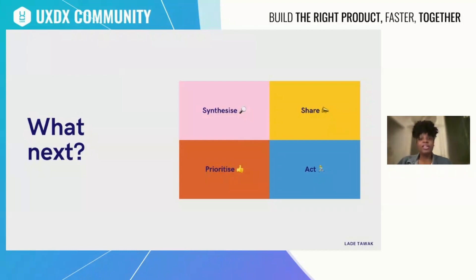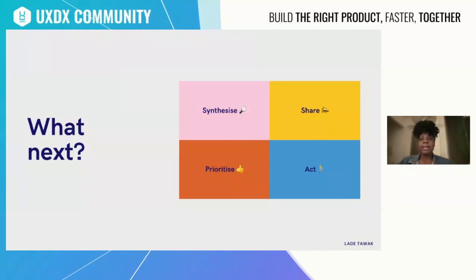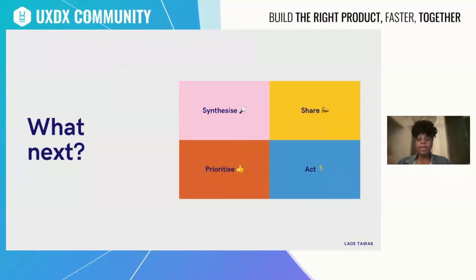Once you have prioritized, you need to act. It's not enough to synthesize, share, and prioritize if you don't act. Acting can be following up with the product manager on what's next, or directly implementing wherever possible — for example, if people are constantly complaining about a particular flow, you can create a new wireframe or prototype to test and improve that flow. Acting can also mean doing more research to uncover how severe a problem is, how relevant a need is, or how important a pain point is to address for your business. And that's it.